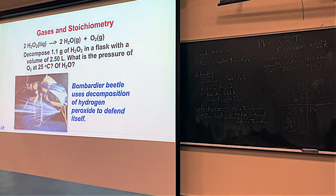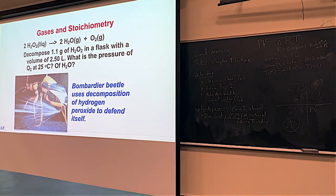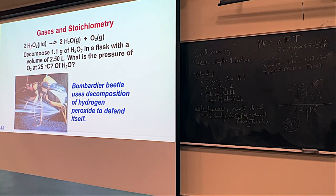This is actually relevant. Apparently, a bombardier beetle uses hydrogen peroxide in its propulsion system — it stores the liquid and somehow turns it into gases that spray out. So Mother Nature has all kinds of tricks. But in our problem, we're starting with pure hydrogen peroxide in a flask and watching it decompose to figure out what the pressure would be.